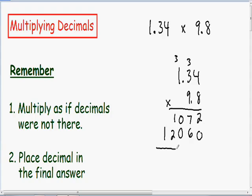And just like a normal multiplication problem, we need to add all these numbers together. 2 plus 0 is just 2. 7 plus 6 is 13, carry the 1. 1 plus 0 plus 0 is just 1. 1 plus 2 is 3, and 1 plus 0 is just 1.